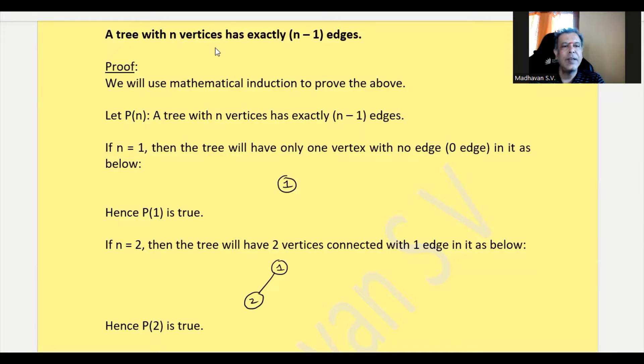We will consider the given statement as P of n. If n is equal to 1, it means that the tree will have only one vertex, which means there is no edge in it, 0 edges. Therefore, the graph will look like this. So we can say P of 1 is true.